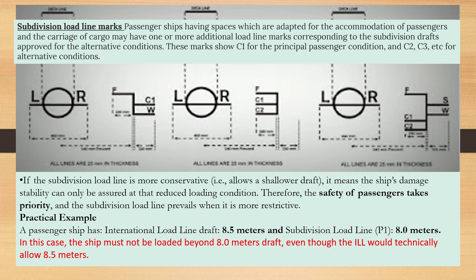Practical example: A passenger ship has an International Load Line draft of 8.5 meters and a Subdivision Load Line of 8.0 meters. In this case, the ship must not be loaded beyond 8.0 meters draft, even though the ILL would technically allow 8.5 meters.